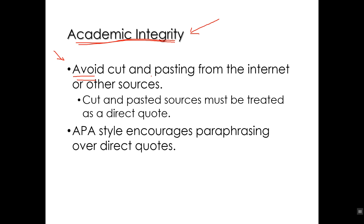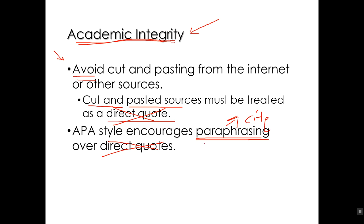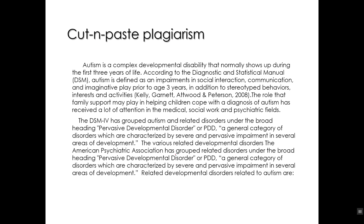Look at what the article said, take notes from it, and then once you understand what it said, describe it in your own words. In APA style, if you cut and paste, that should be a direct quote — and direct quotes are discouraged in APA style and in many technical styles, because paraphrasing is usually more concise, more direct, and more helpful to the reader. That's why we encourage paraphrasing over direct quotes. But even if you paraphrase, you must cite the source you're paraphrasing from. Let's look at an example of cut-and-paste plagiarism from a student's paper.